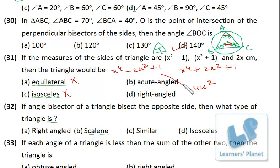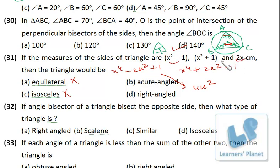Now if I add these two — x⁴ minus 2x² plus 1 and 4x² — I get x⁴ plus 2x² plus 1, which is the square of the third side. That means the square of the first side plus the square of the second side equals the square of the third side. So it is a right angle triangle, where the two smaller expressions are the perpendicular and base, and the third is the hypotenuse.